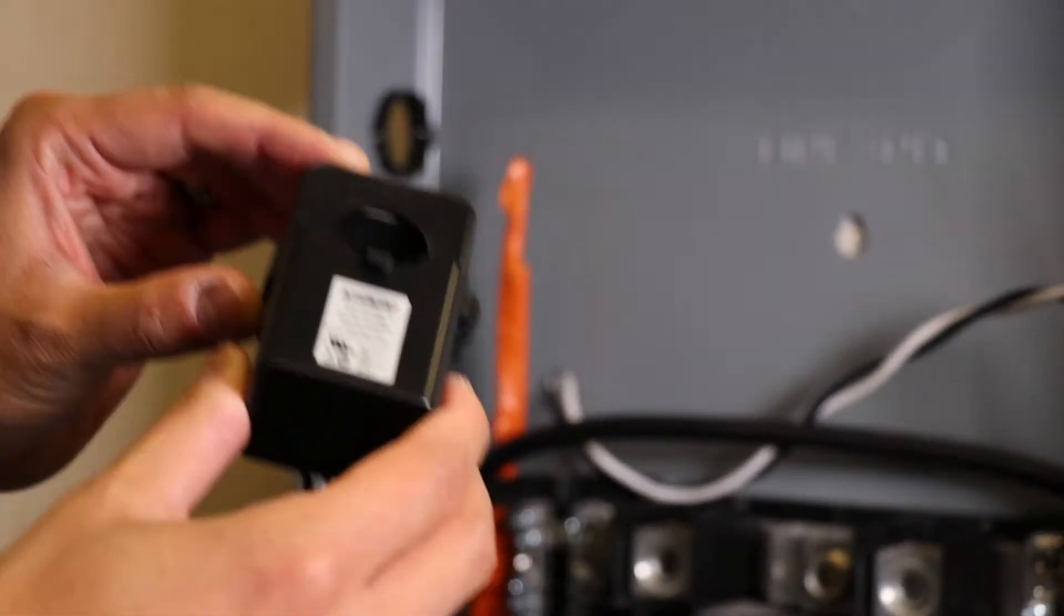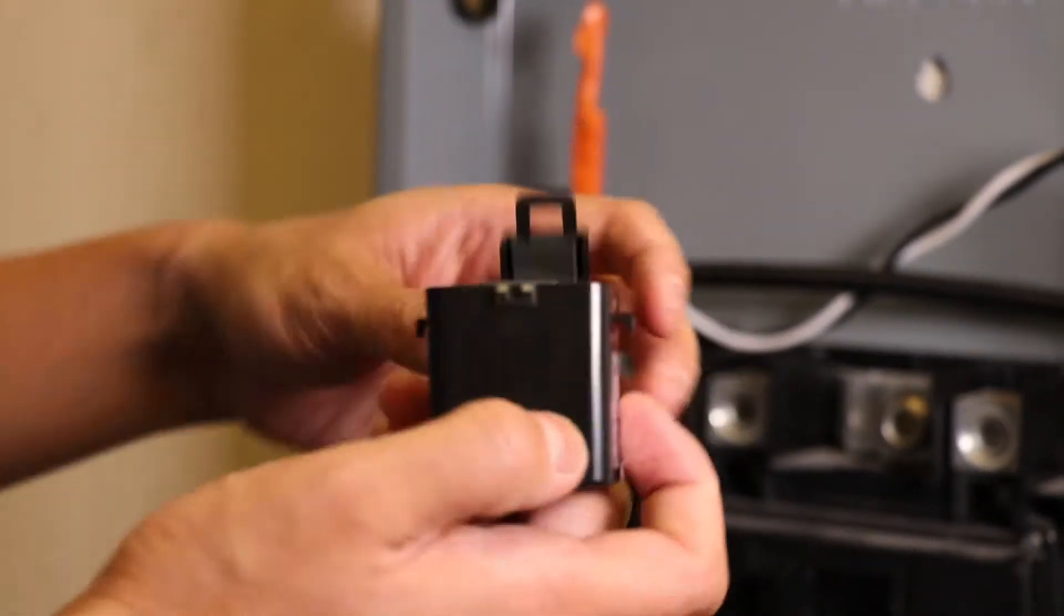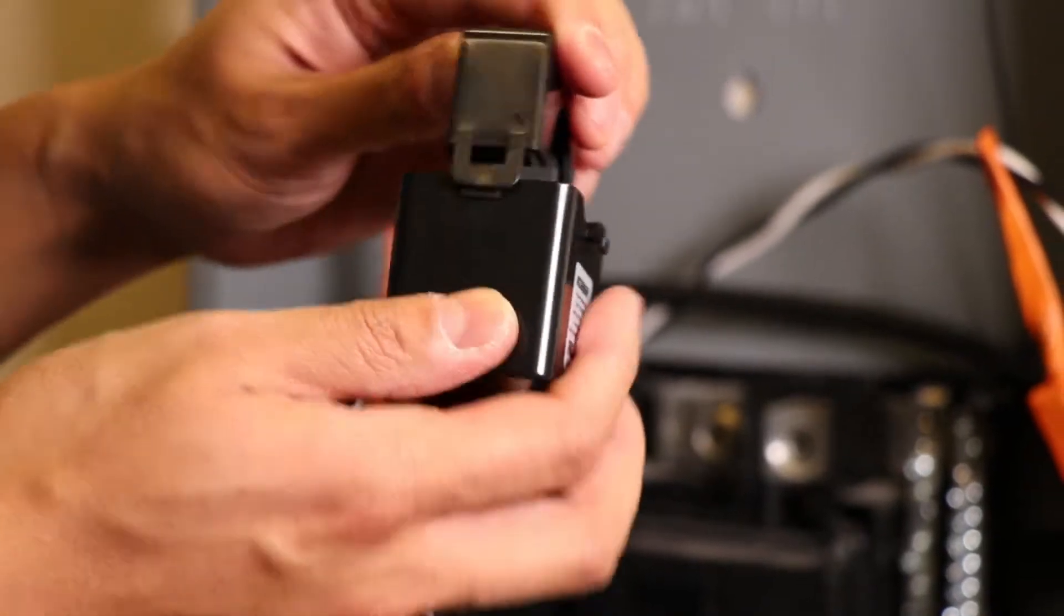One is an AccuEnergy split core current transformer. There's a tab on the side that you pry open and there's a hinge and your current goes through this clamp.